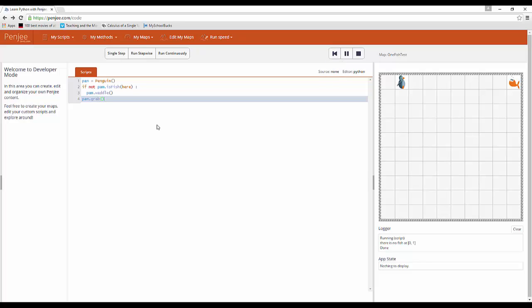Essentially, the if statement tests once if there is any fish at Pam's location, and if there is not, Pam will waddle.